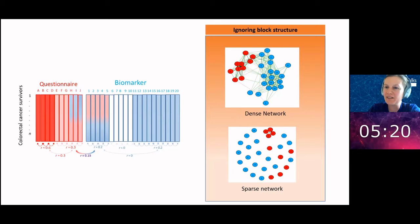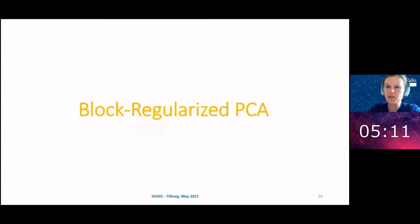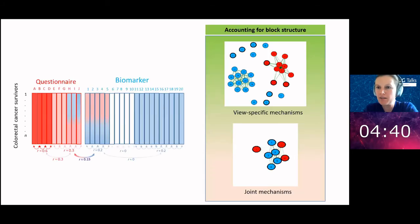The answer to handling this type of multi-block data or multi-view data is to take the block structure really into account. This is something I've been focusing on during the past five years. I developed a principal component type of model that uses block regularization, which really tells the data analysis that there is this block structure and we're interested both in finding view-specific associations but also in finding very small relations between the blocks.